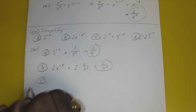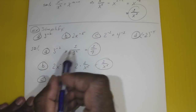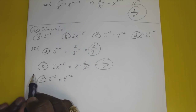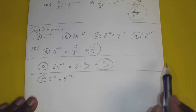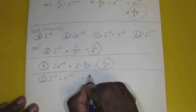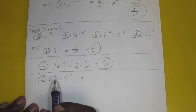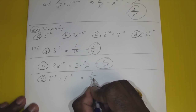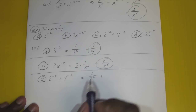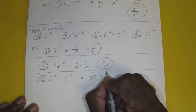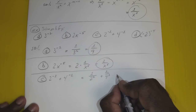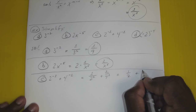For problem C: 2 to the negative 1 power plus 4 to the negative 1 power. Take each negative exponent and move it down to the denominator: 2 to the negative 1 is 1 over 2, and 4 to the negative 1 is 1 over 4. So we have 1 half plus 1 fourth.